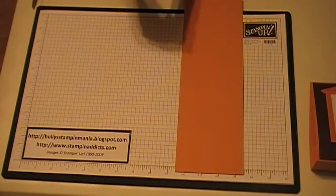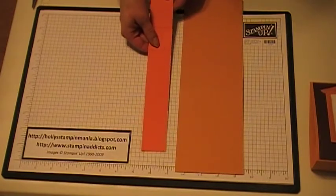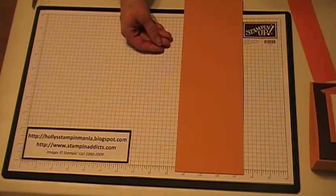Then you want to cut another piece of cardstock at 10 by 1.5. I did pumpkin pie. I'm going to set this aside for a minute.